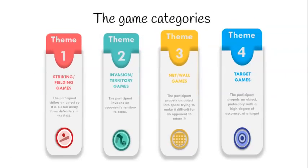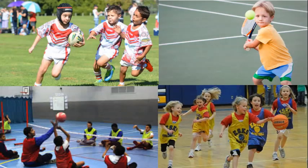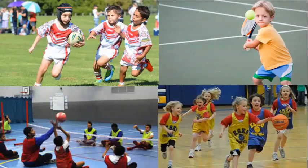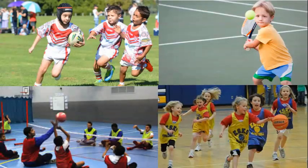Each category covers games that have a similar structure. By exposing students to the primary rules, fundamental skills, and technical problems associated with the games in each category, students become able to participate in a variety of games. The key point is that when using the TGFU model, you should understand the key technical problems of each category and then design games focusing students' decision-making and skill development on solving those technical problems.